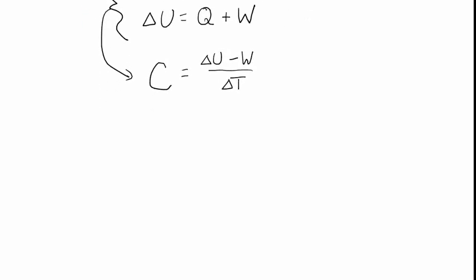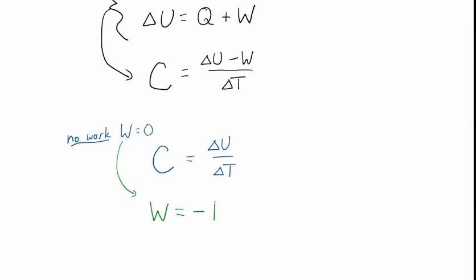If no work is done — if W is equal to zero — then the heat capacity is simply the change in the internal energy divided by the change in temperature. For an ideal gas, the work done on the ideal gas is equal to minus the pressure of the gas times the change in volume. So if no work is done on the ideal gas, that means the volume of the ideal gas is not changing.